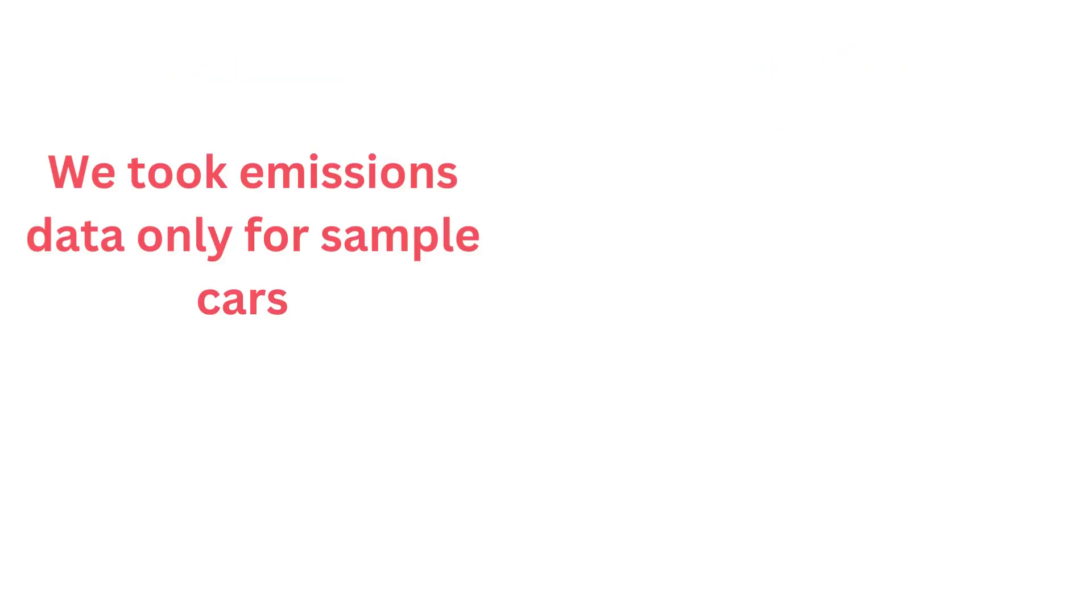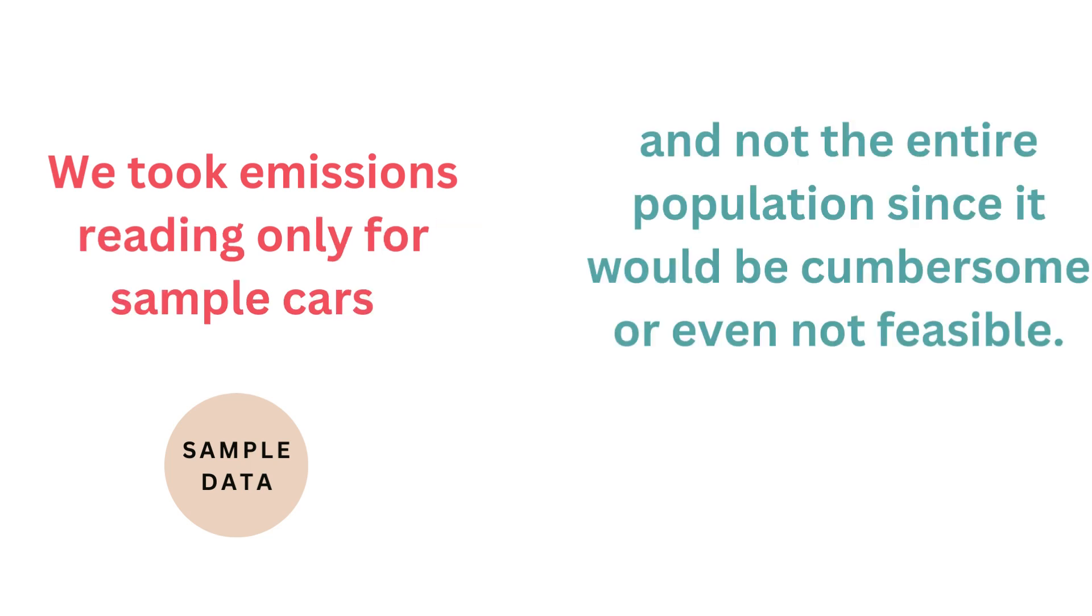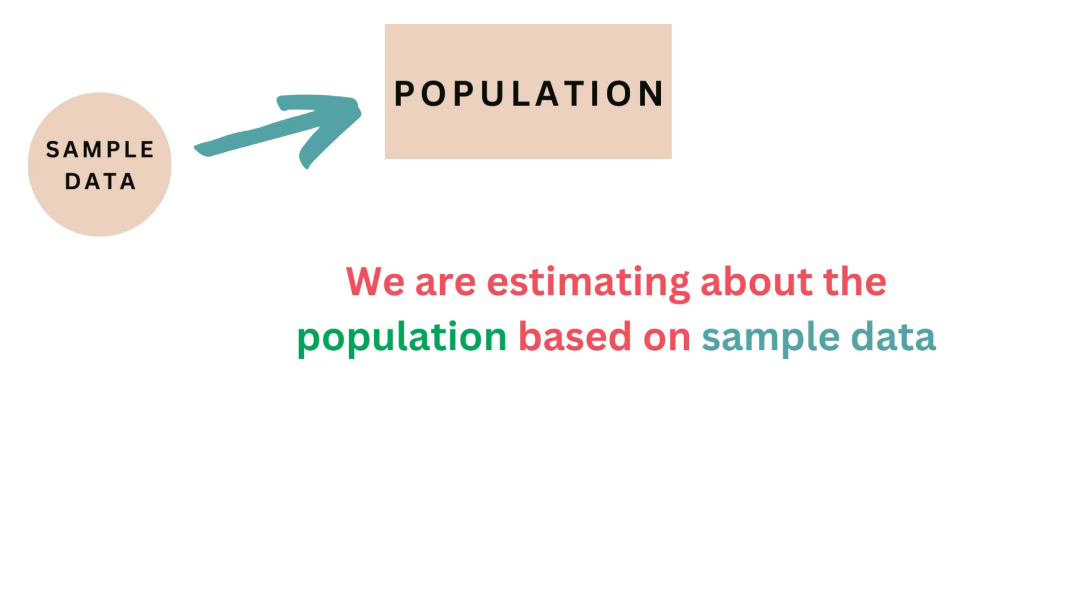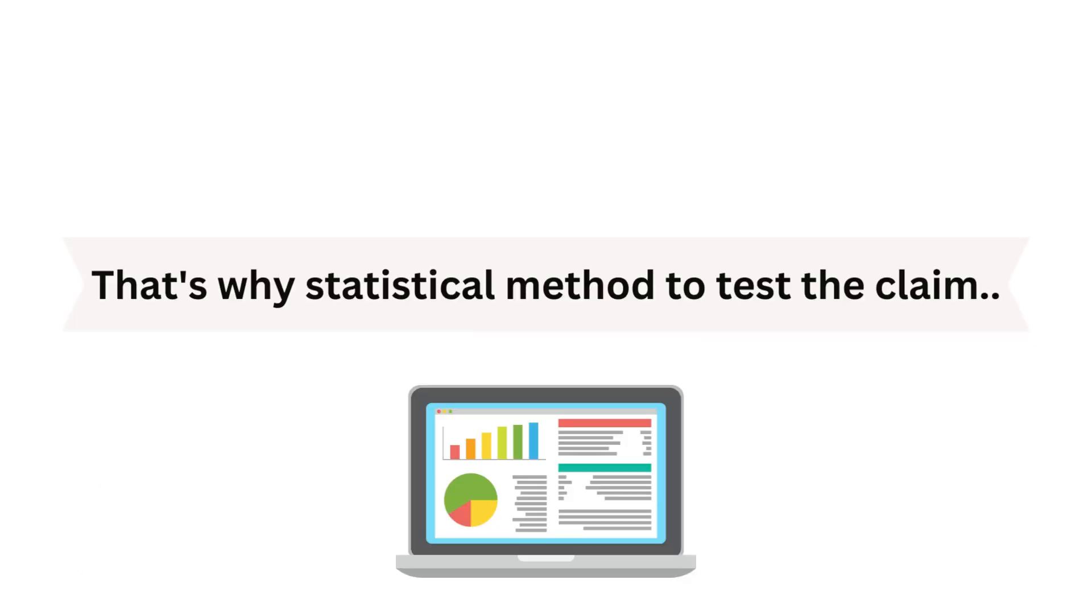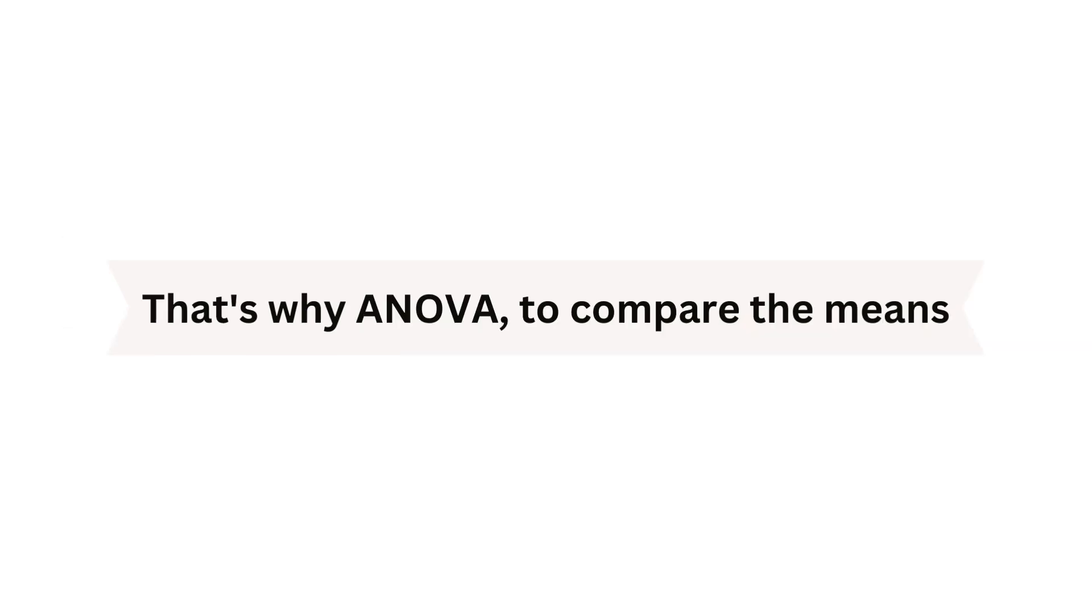We took emissions data from sample cars, right, and not the entire population, since it would be cumbersome to collect or not even feasible to do so. So what we are doing is estimating about the population based on sample data. Hence, we need to make sure that the means we calculated from the sample hold true for the population as well. That's why we need to statistically check our claim. That's why we use ANOVA to compare the means.